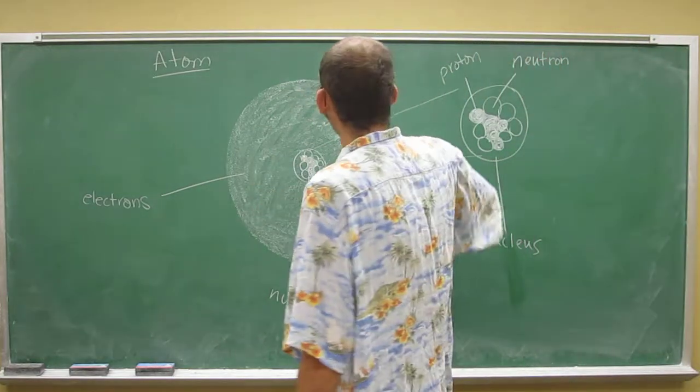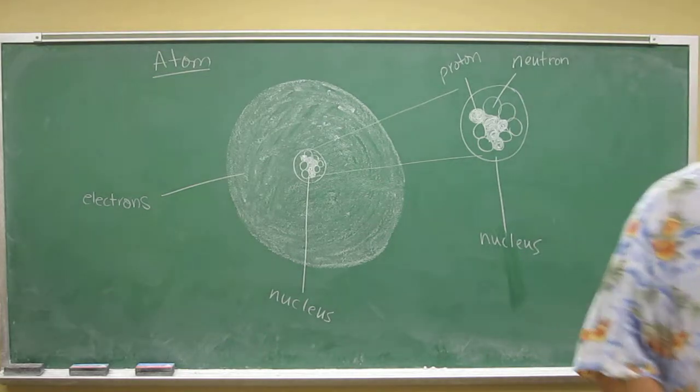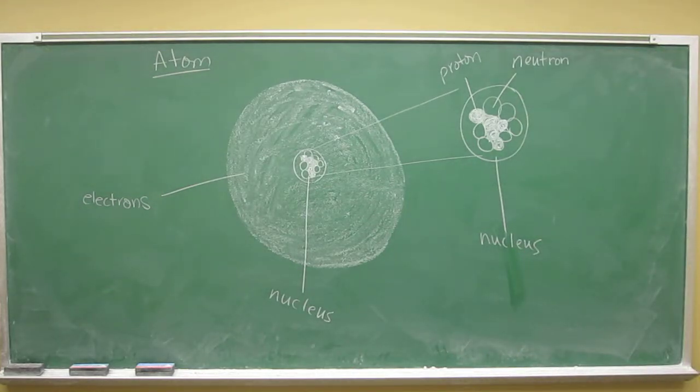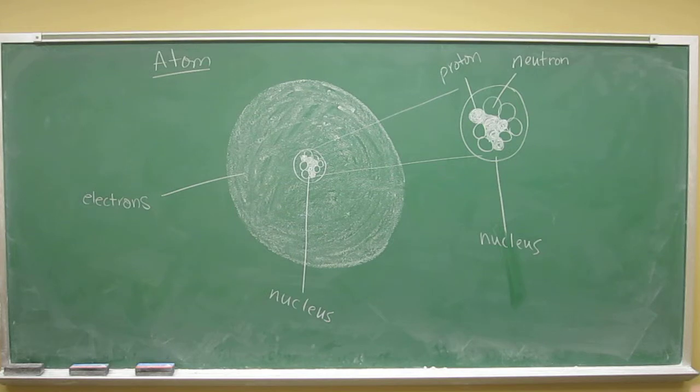And then there are these other wave-type subatomic particles that we call electrons, which form a cloud of negative charge density around the positively charged nucleus.